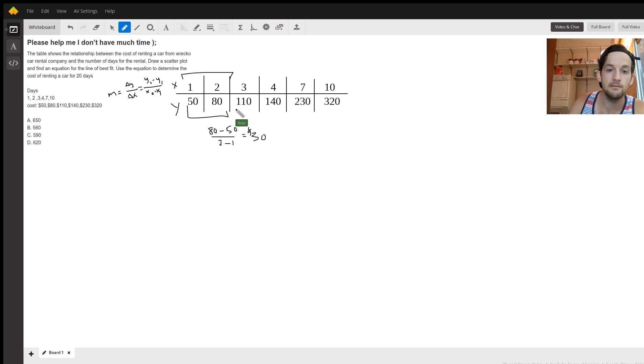From 80 to 110, that's another $30. And two to three, that's one day. So that checks out. 110 to 140 is $30 over one more day. Now, next, it may get a little trickier, you may think, 140 to 230. If you subtract, that's $90.